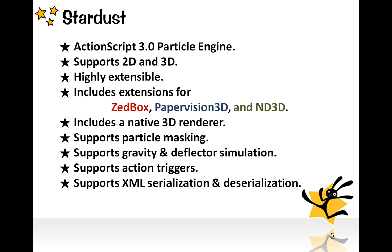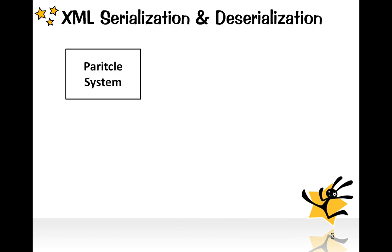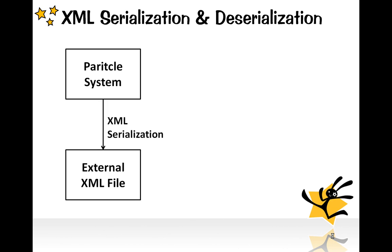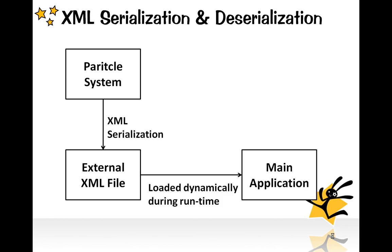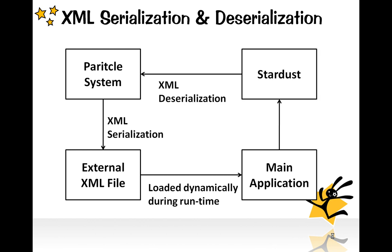The most important feature of Stardust is that it supports XML serialization and deserialization. You can use its XML serialization feature to serialize the particle system into an external XML file, which can be later loaded dynamically by your main application during runtime, so that it can be deserialized back to reconstruct your particle system. The advantage is that if you want to tweak your particle system's parameters, you can simply open the external XML file, change the parameter values, save it, and that's it — without having to recompile your main application.